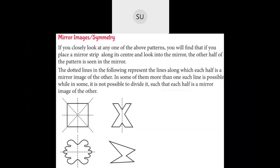If you closely look at the patterns you will find that if you place a mirror strip along its center and look into the mirror, the other half of the pattern is seen in the mirror. The dotted lines in the following represent the lines along which each half is a mirror image of the other. In some of them more than one such line is possible, whereas some do not have any mirror image. In some there is more than one such line possible while in some it is not possible to divide it such that each half is the mirror image of the other.